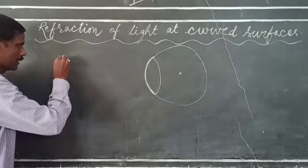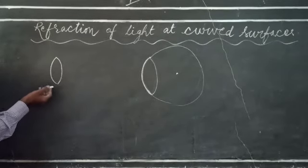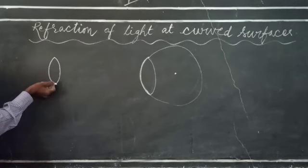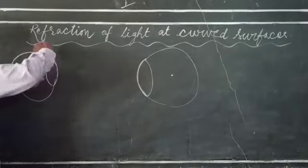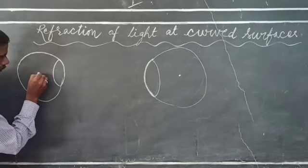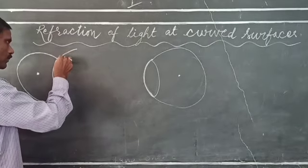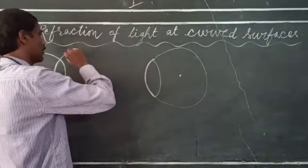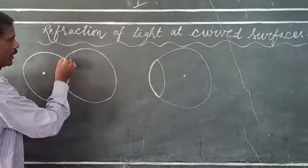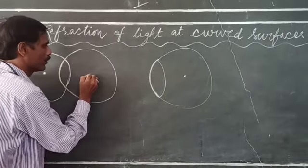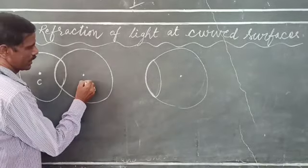For example, if you take a lens, both the surfaces are curved surfaces — they are parts of a sphere. If you consider a sphere of which one surface is a part, then the center of that sphere is known as the center of curvature. There may be two centers of curvature for a lens — one on each side. Center of curvature is generally represented by C.